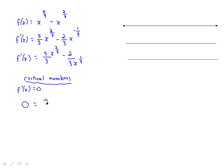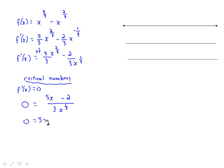We should put the derivative into a form with a common denominator to make the interval analysis easier. The common denominator is 3x^(1/3). Multiplying (5/3)x^(2/3) by x^(1/3) top and bottom gives 5x, so f'(x) = (5x - 2) / (3x^(1/3)). Setting the numerator to zero: 5x - 2 = 0, so x = 2/5.